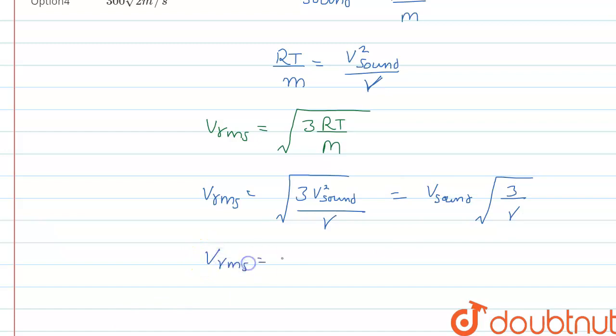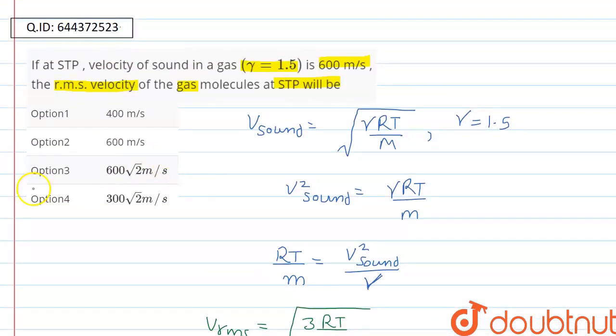Now just we have to put the value of gamma that is 1.5. Hence v_rms will be 600, that is speed of the sound given to us, into under root of 3 upon 1.5. And solving this we will be getting 600 into under root of 2 meter per second. Which option is correct? Option 3 is the correct option, 600 root 2 meter per second. Thank you.